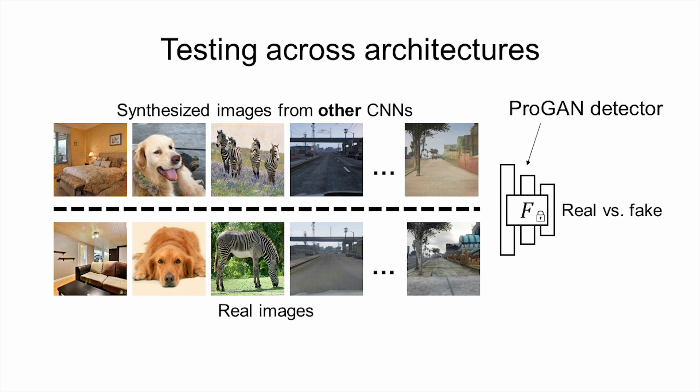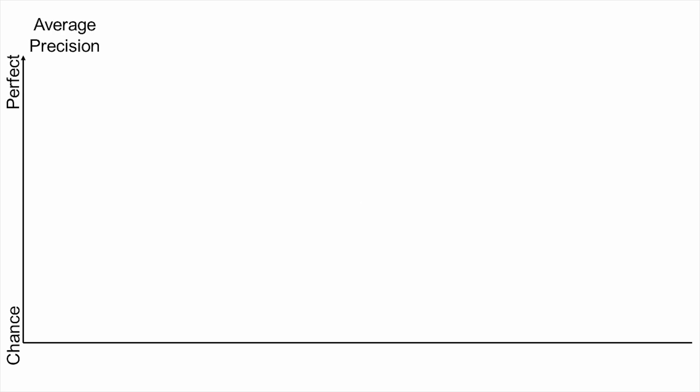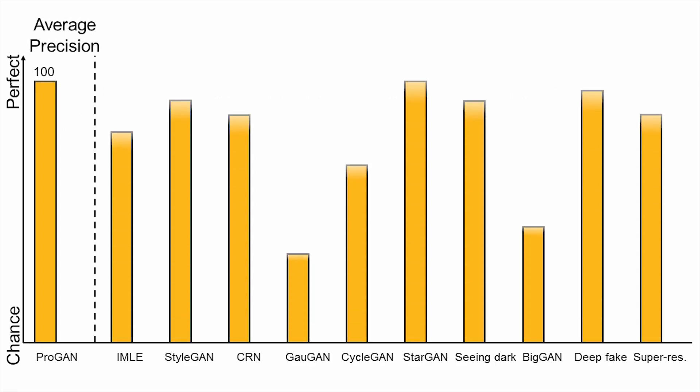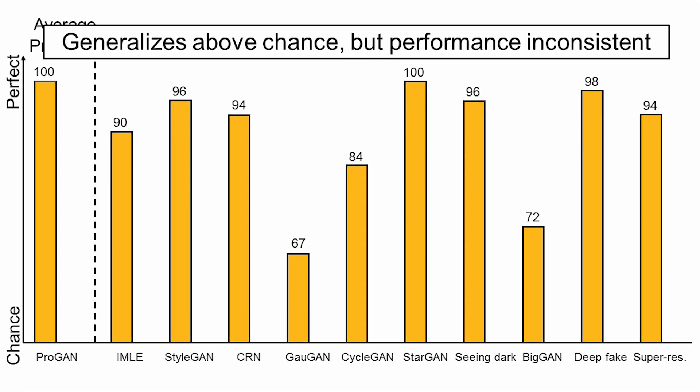To evaluate how well our detector generalizes, we test our trained model on all the other CNN datasets without any retraining or fine-tuning. We report the average precision, since it is a ranking-based score that is not sensitive to the threshold of real and fake images in the dataset. On the y-axis, we show average precision where the bottom is chance at 50% and the top is perfect at 100%. If we train and test on ProGAN, our model gets 100%. If we try to generalize to others, it's above chance, but the performance is inconsistent.